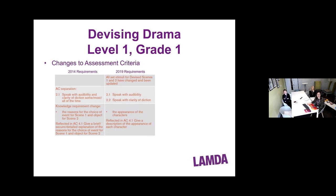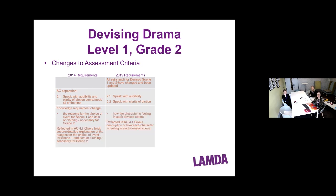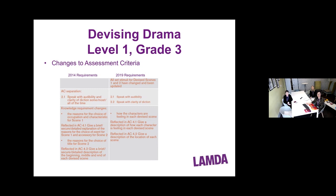For Grade 1 devising, the set stimuli have changed and been updated for Scenes 1 and 2, with separation of audibility and clarity of diction. Learners will now be asked about the 'appearance of the characters' rather than their reasons for the choice of theme or stimuli. For Grade 2, similar separation of audibility and clarity of diction, and learners will be asked 'how the character is feeling in each devised scene' rather than the reasons for their choice of event. Grade 3 is very much the same, with the separation of audibility and clarity of diction.